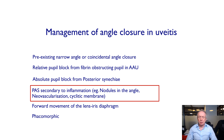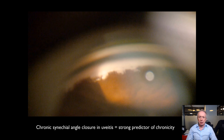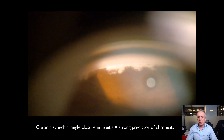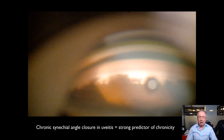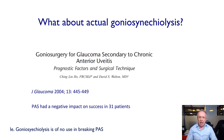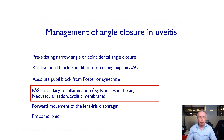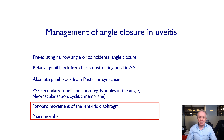Chronic secondary angle closure is not something that you can fix surgically — it is really a predictor of long-term chronic pressure problems. Goniosynechiolysis here doesn't work; it bleeds. In this publication, angle surgery was found to be most successful when the angle is completely open, and peripheral anterior synechiae had a negative impact on success.